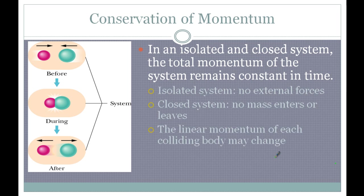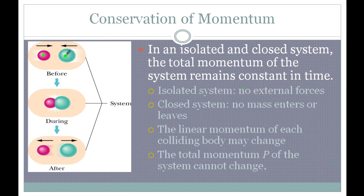The momentum of each body may change, but the total momentum is going to be the same throughout the whole time. That should be a lowercase p — my bad. The momentum of each object, so like this guy's momentum before and this guy's momentum before, might be different afterwards. But the total momentum when you add all these momentums up is going to be the same before, during, and after. It's always going to be the same.